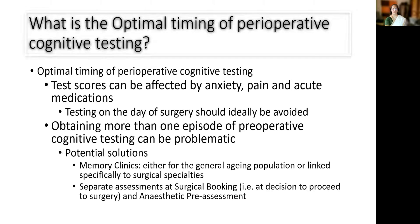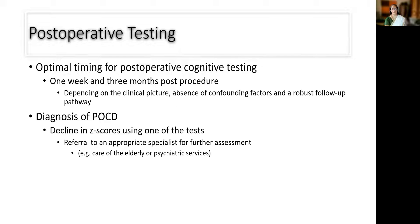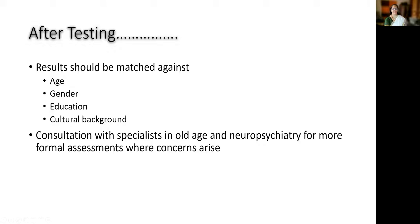There are several confounding factors for these tests — for example, pain can interfere with testing. The optimal time for testing in the perioperative period is when the patient is minimally affected by anxiety, pain, or acute medications. It requires dedicated clinics to perform the testing. Postoperatively there are also many confounding factors; ideally, testing should be done at one week and at three months after the procedure. A decline in Z-scores using one of the tests identifies cognitive decline, and this should be interpreted in the context of the patient's age, gender, and education level. If decline is severe, consult a geriatrician or neuropsychiatrist.